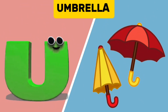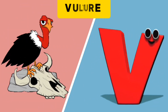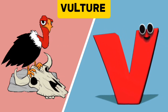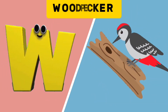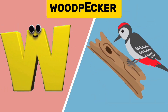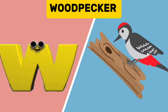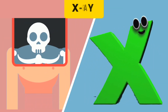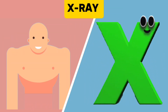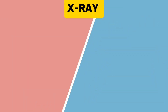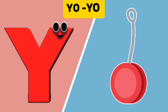U is for Umbrella. U, U. Umbrella. V is for Vulture. V, V. Vulture. W is for Woodpecker. W, W. Woodpecker. X is for X-Ray. X, X. X-Ray.